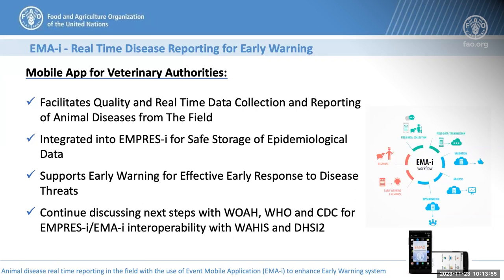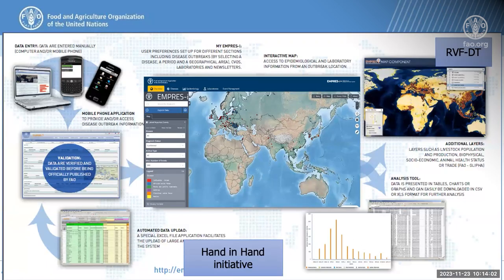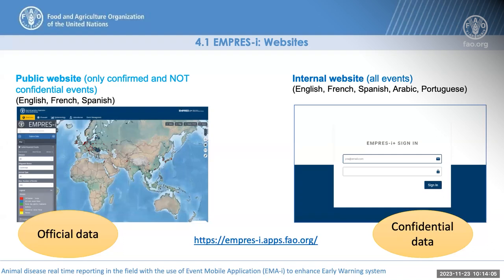MII is integrated with a platform called EMPRES. We have a public website where you can access all the official information collected from WAHIS, EIOS, and all official information on disease events, translated into three languages. We also have a private interface directly connected to MII from which the validation flow — the acceptance and validation of events coming in from the field — can be accessed, visualized, and analyzed.